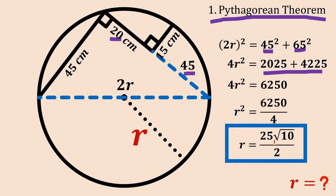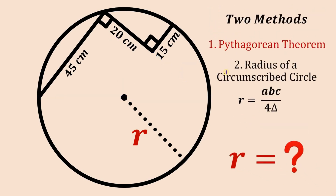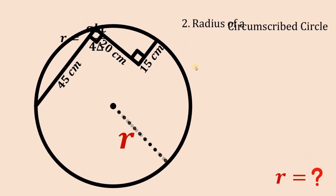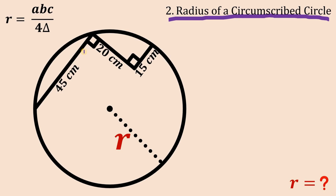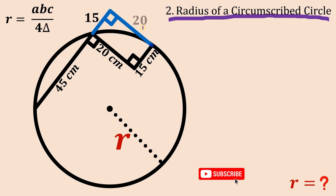Using the first method, the length of the radius is 25 times the square root of 10 all over 2 centimeters. Now let's proceed to the second solution using the radius of the circumscribed circle. We need a triangle inside our circle. We extend the 45-centimeter segment and connect it to create a small rectangle on top. Since it's a rectangle, the opposite sides are equal: 15 centimeters and 20 centimeters. Connecting these points creates a right triangle with legs 15 and 20.